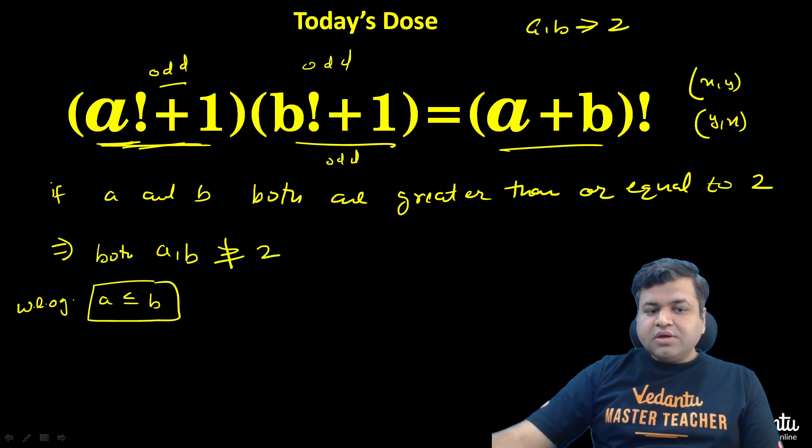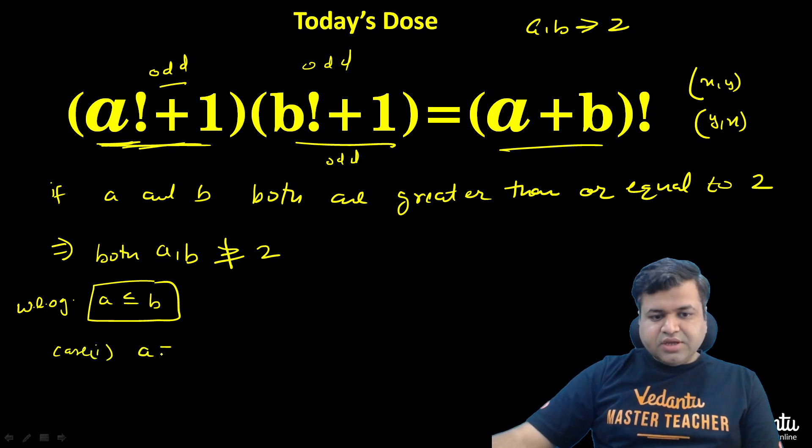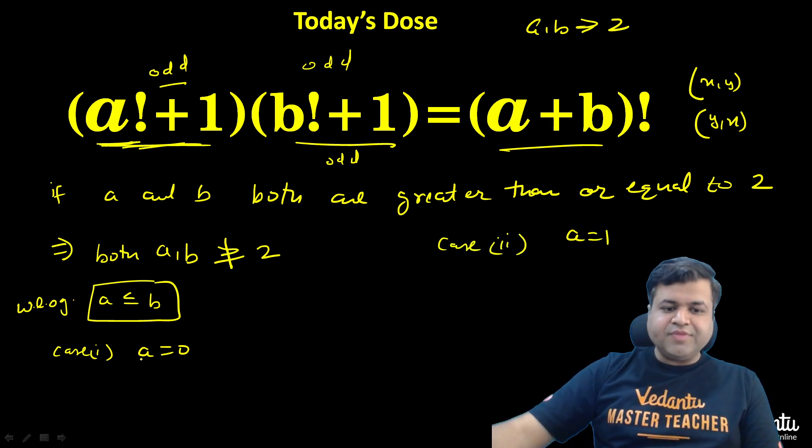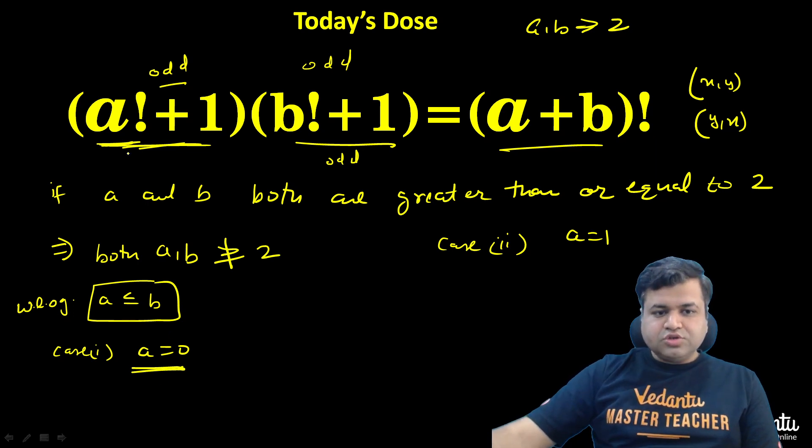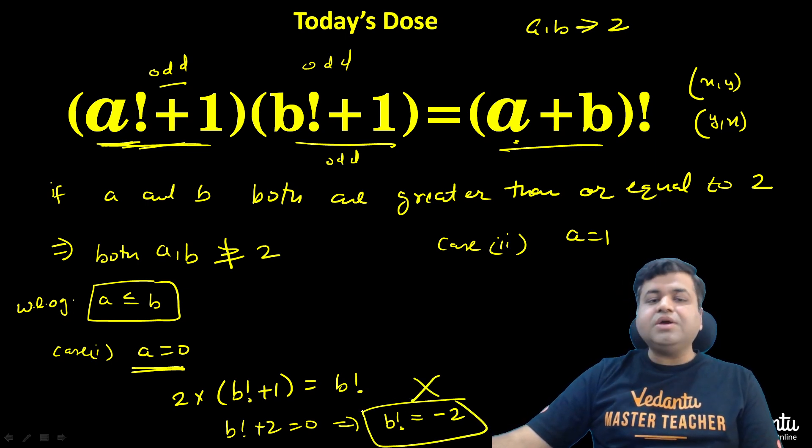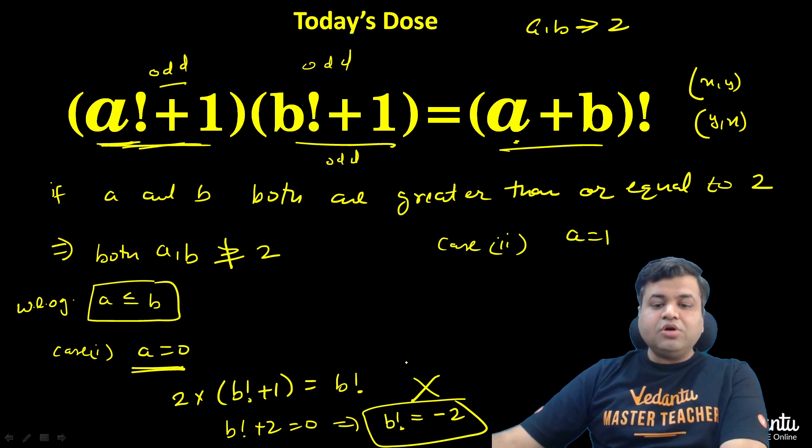And since we have claimed both a, b cannot be greater than or equal to 2, let's assume Case 1: a equals 0. And later on we will analyze Case 2 when a equals 1. Now first assume when a equals 0. So our equation turns to 0 factorial is 1, so that is 2 times b factorial plus 1. That will equal a is 0, so that equals b factorial. We are left with b factorial plus 2 equals 0, or you can say b factorial equals minus 2. Which is not correct. The factorial of any whole number cannot equal a negative number. So b factorial cannot equal minus 2.